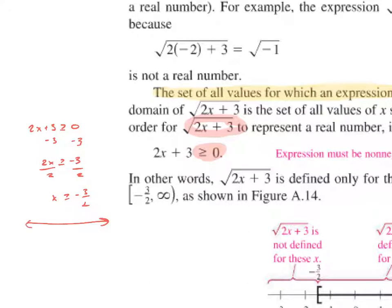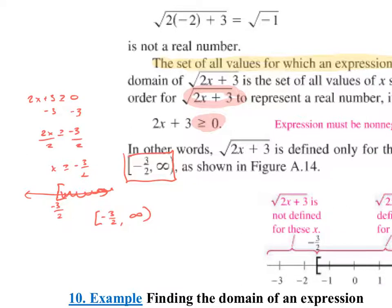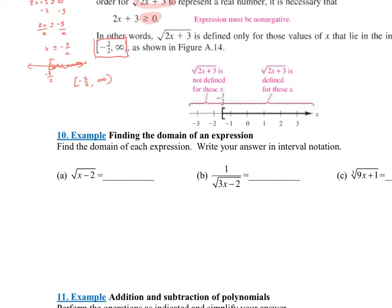On the number line, plot -3/2. Since x is greater than or equal to -3/2, shade to the right and use a bracket because we can equal that number. In interval notation the answer is [-3/2, ∞) — remember you always use parentheses with infinity. So the domain of that function is [-3/2, ∞).